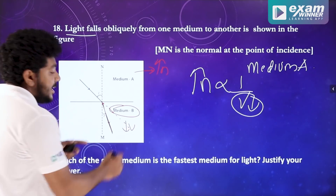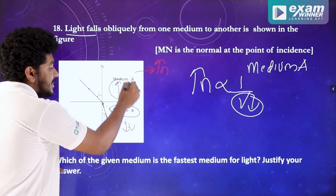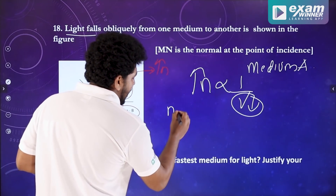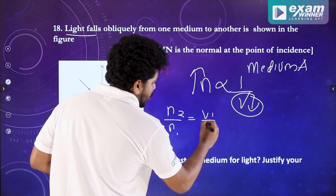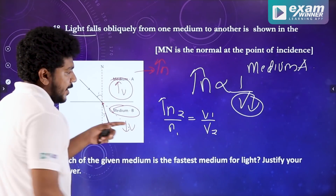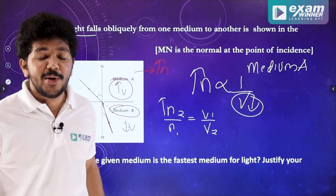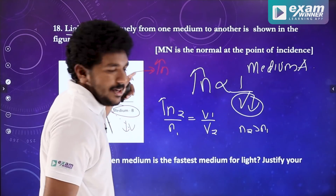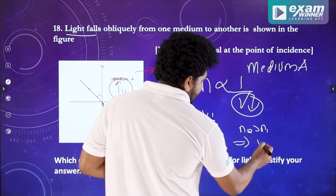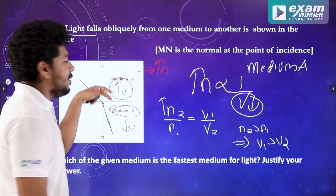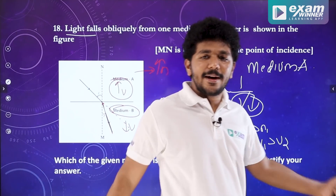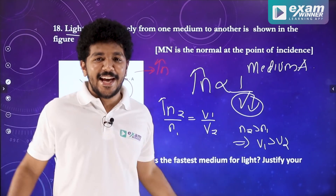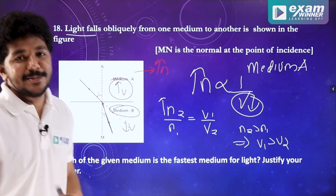That means v1 (medium A) is greater than v2 (medium B), so medium A has higher velocity. If you have two marks: medium A is one mark and the justification is one mark. We will discuss it in the live session.